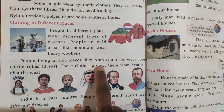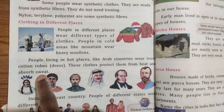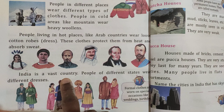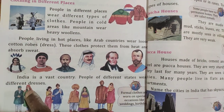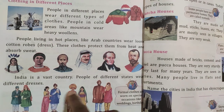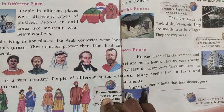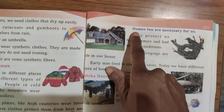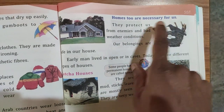People living in hot places like Arab countries wear loose cotton robes. These clothes protect them from heat and absorb sweat. India is a vast country — people of different states wear different dresses. Formal clothes are worn on special occasions like weddings and birthdays.